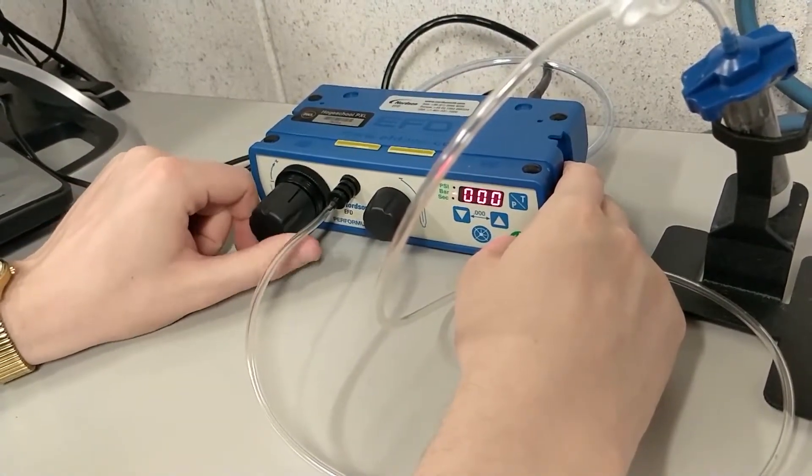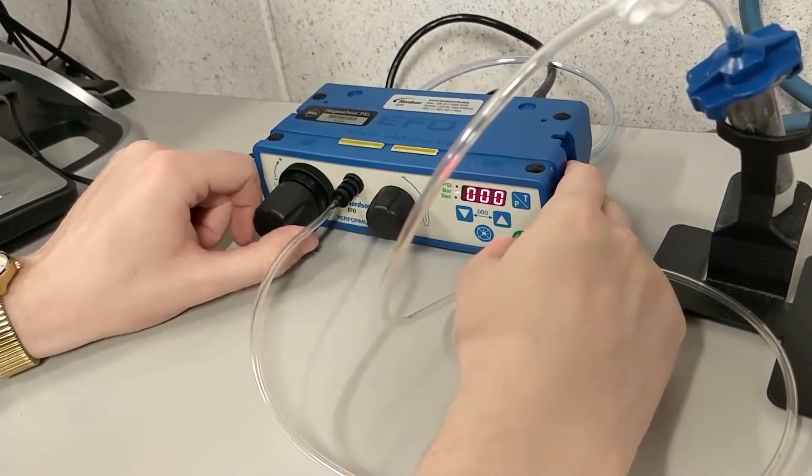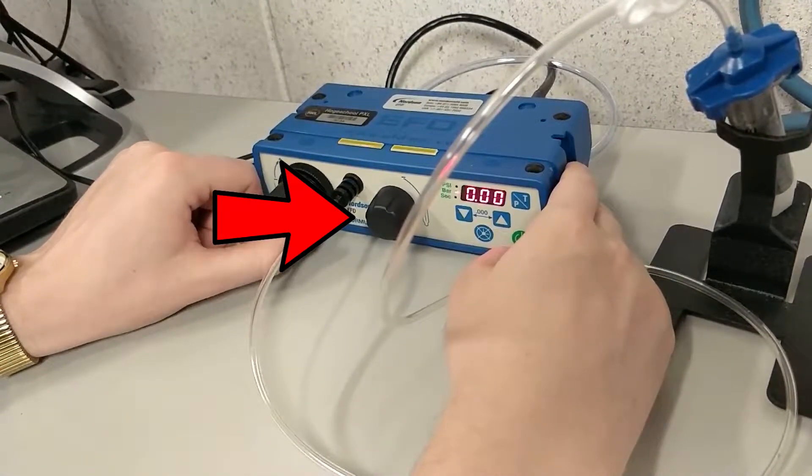If you are dispensing a very runny liquid, you can also set a vacuum with a smaller knob. This vacuum will be applied in between dispenses and will prevent the liquid from dripping out.